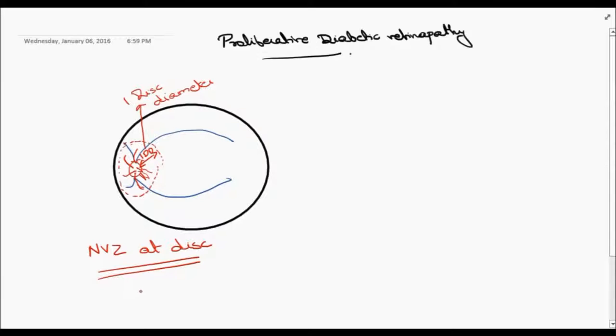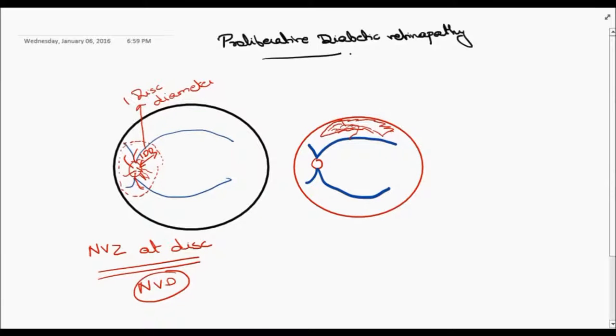The second type is called neovascularization elsewhere, in which new vessels are formed away from the disc. The presence of these new vessels indicates that the patient has PDR, irrespective of hemorrhage or other findings the patient might be having.